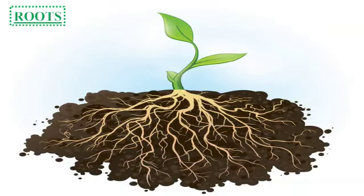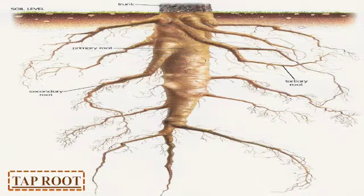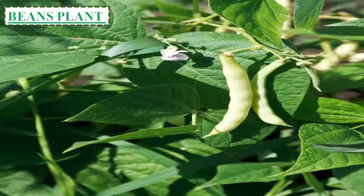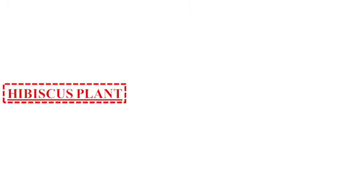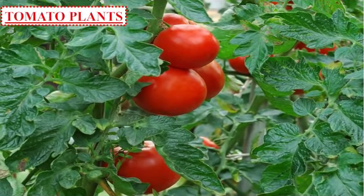Look at the picture: taproot and fibrous root. This is taproot. Look at the picture: beans plant, hibiscus plant, tomato plants.